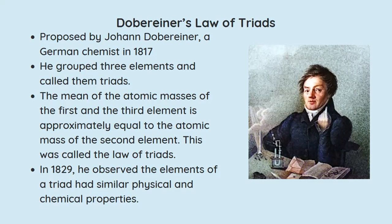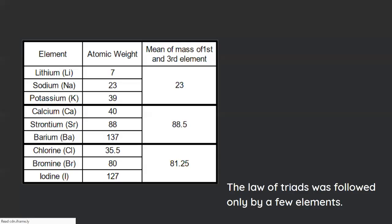He also noticed in 1829 that the elements of the triads had almost similar physical and chemical properties. But the issue with the law of triads was it was only followed by a few elements, so there had to be a better way for classification of the elements.